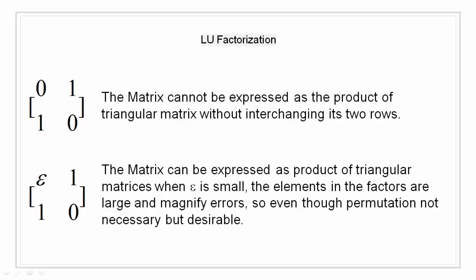Before moving to example I want to say a couple of things about the necessity of permutation in LU factorization. For this sake let's first take the first matrix shown that is 0 1 and 1 0. This matrix cannot be expressed as the product of triangular matrix without interchanging its two rows. So in this case permutation is required. Whereas in the second case with epsilon in the matrix, this matrix can be expressed as a product of triangular matrices but when epsilon is small the elements in the factors are large and those magnify the errors. So even though permutation is not needed in this case it is desirable to have so as to have a more accurate result.